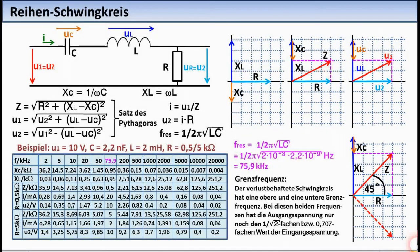All this should be done for two different values of R, namely for R equals 0.5 kilo ohms and for R equals 5 kilo ohms. The necessary formulas can be easily traced from the phasor diagrams. The resonant frequency results from the known formula with F res or F0 equals 75.9 kilohertz. All calculated intermediate and final results are entered in the table.